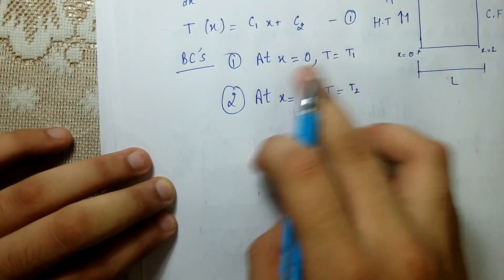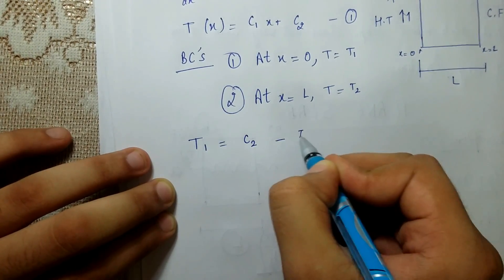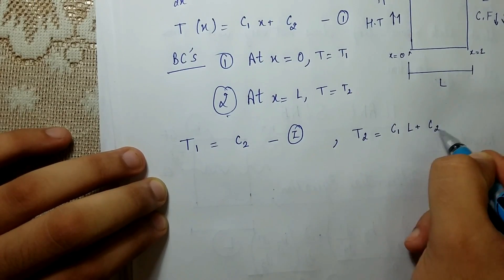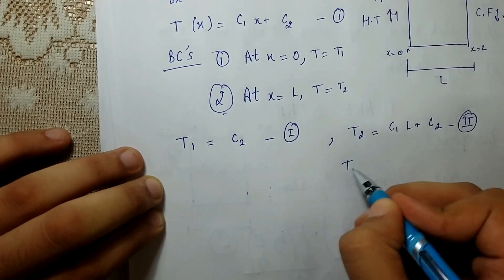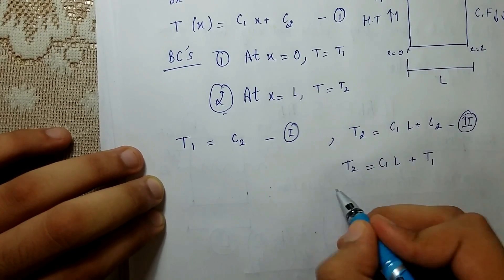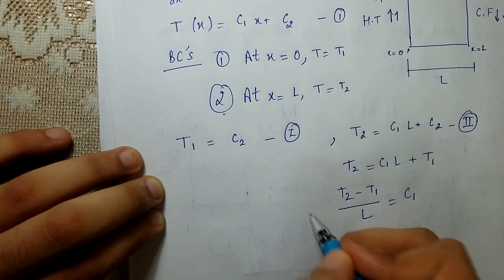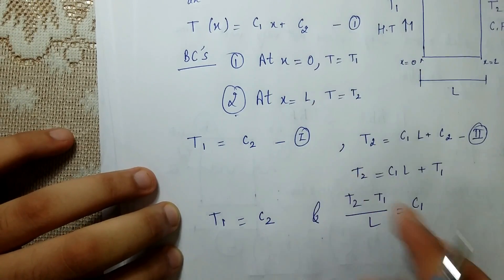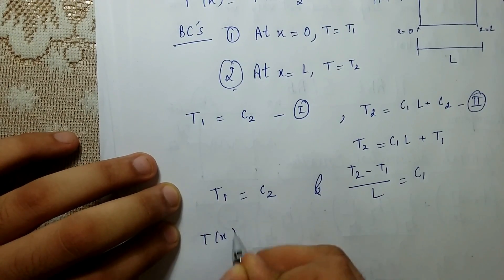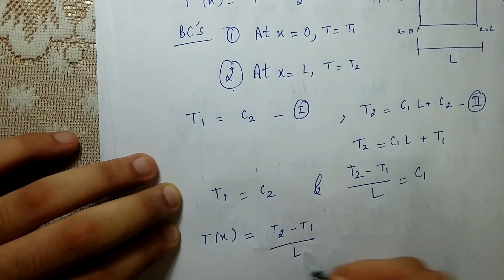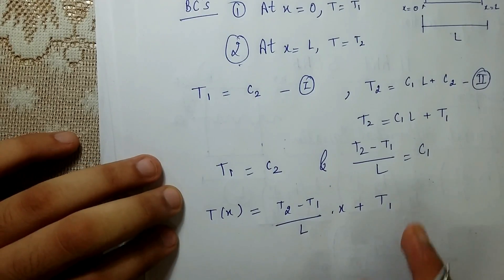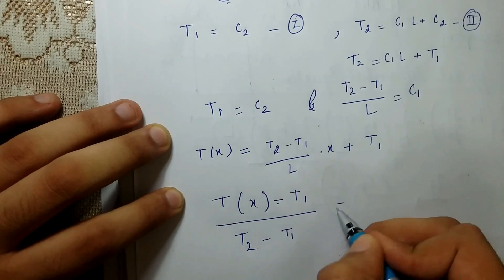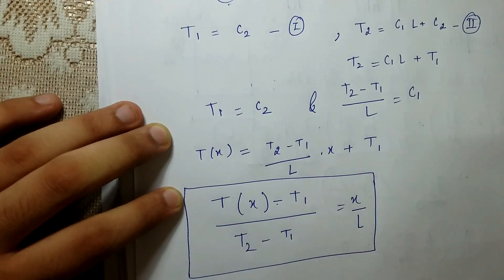Applying the first boundary condition (x = 0, T = T1) gives T1 = C2. Applying the second boundary condition (x = L, T = T2) gives T2 = C1·L + T1, so C1 = (T2 − T1)/L. Substituting back, the temperature distribution is: T(x) = ((T2 − T1)/L)·x + T1, which can be rearranged as (T(x) − T1)/(T2 − T1) = x/L.